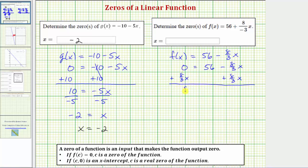Simplifying, we have eight-thirds x equals 56 and negative eight-thirds x plus eight-thirds x is zero.